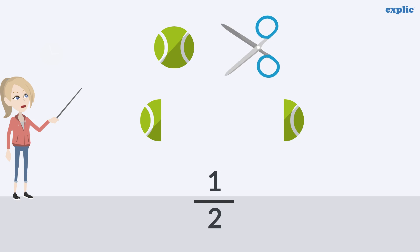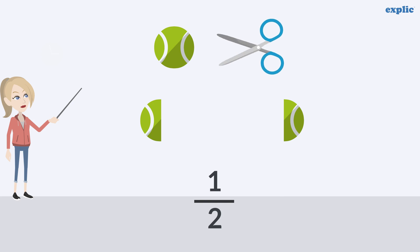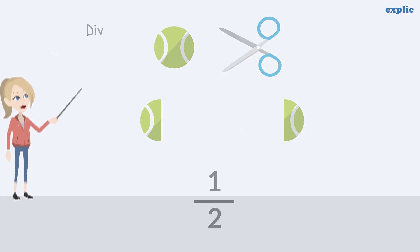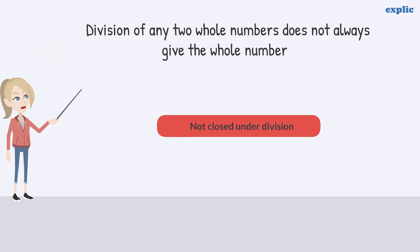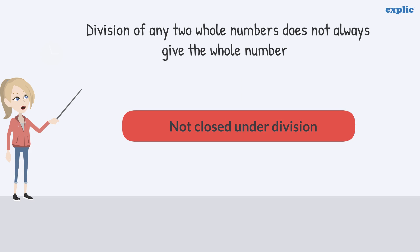How about dividing a ball into 2 equal parts? Is it a whole number? No, it's not a whole number. Therefore, the division of whole numbers does not always give a whole number. We can say that whole numbers are not closed under division.